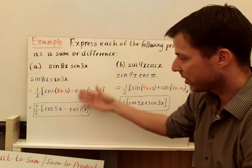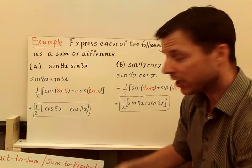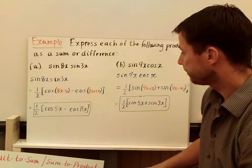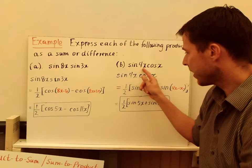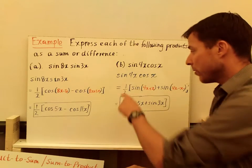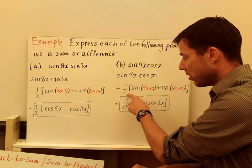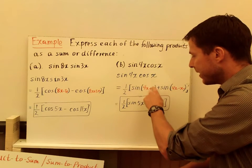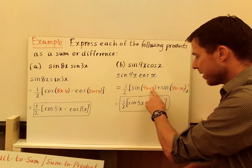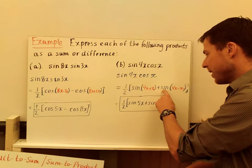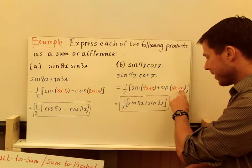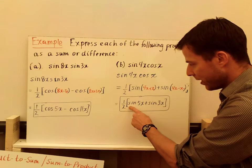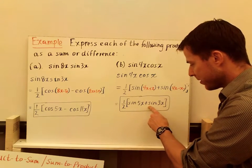So we've gone from a product to a sum - they're equivalent. In part b, I have sine of 4x, cosine of x. So I rewrite my problem, then I go one half times the sine. My alpha is 4x, my beta is x, so I have 4x plus x plus sine of 4x minus x, and I get one half times the quantity sine of 5x plus sine of 3x.